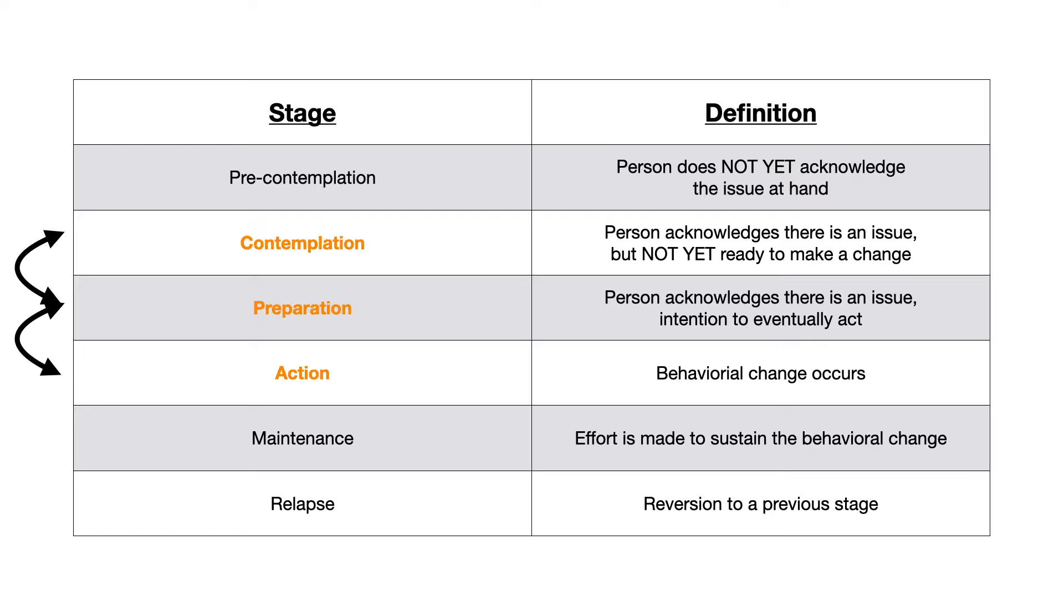So where the test is going to go is they're going to ask you to pick between these three stages, they're going to ask you to pick between contemplation, preparation, and action. And they're going to word the question intentionally vaguely to make you cast doubt on like, did they do an action yet? Or are they still preparing? So I want to try to give you a very simple conceptual framework from which to look at this to make this simple.